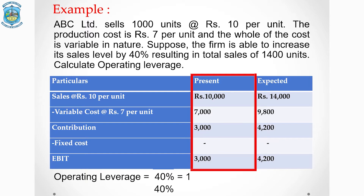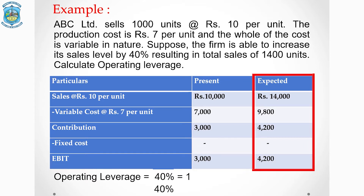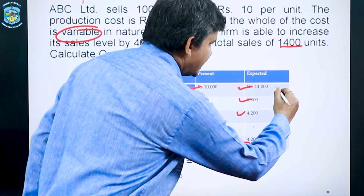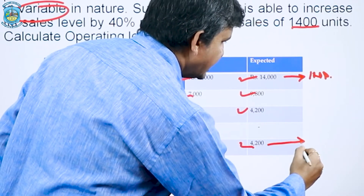Variable cost comes to rupees 7,000 (1,000 × 7). Deducting variable cost from sales gives contribution of rupees 3,000. Because there is no fixed cost, contribution equals EBIT, so EBIT at the present level is rupees 3,000. When the firm increases sales by 40% to 1,400 units, new sales are rupees 14,000, variable cost is rupees 9,800, and contribution becomes rupees 4,200, which also equals EBIT.